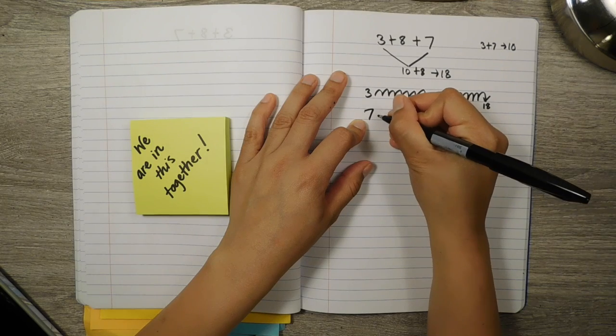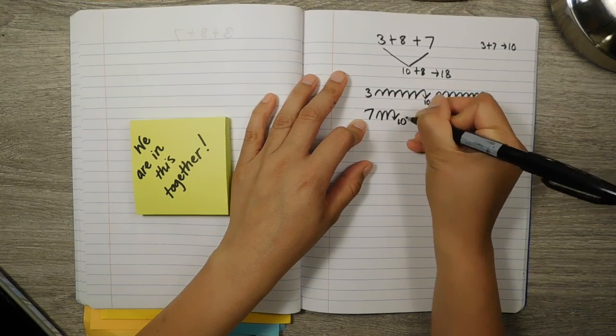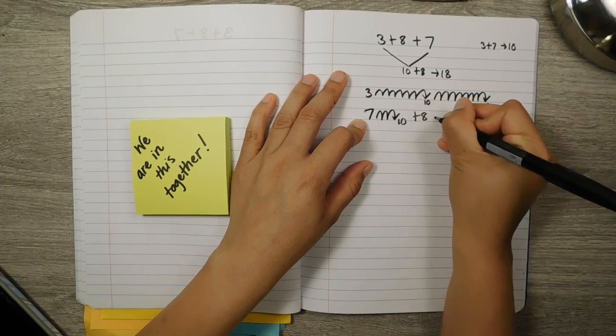Count up 3 more: 1, 2, 3, got to 10, and then just added 8 more to get to 18.